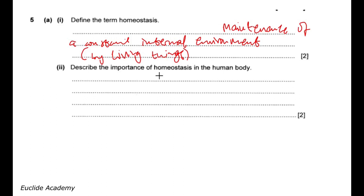Going too far above or below the normal body temperature will probably cause the body cells not to function properly, and that means trouble for the living thing. The job of homeostasis is to stabilize things so that you have a constant internal environment.